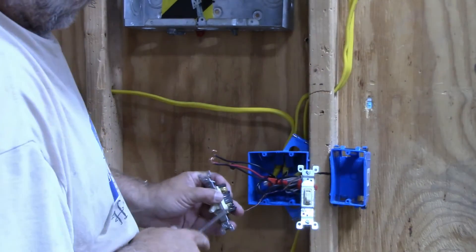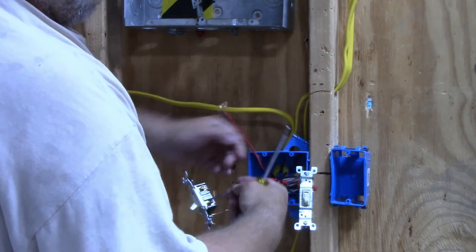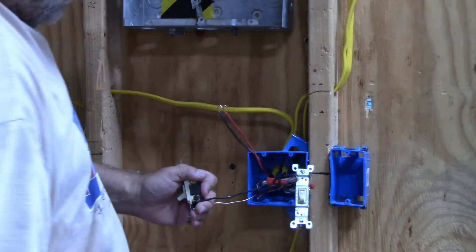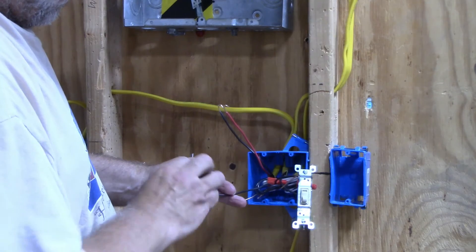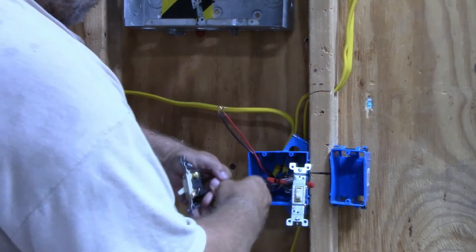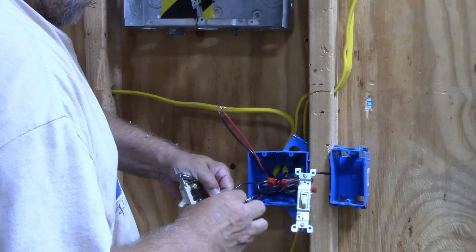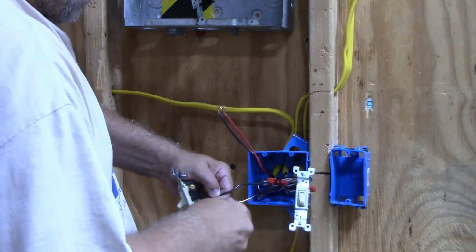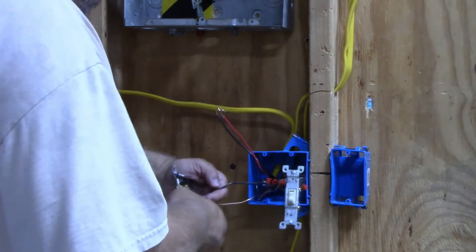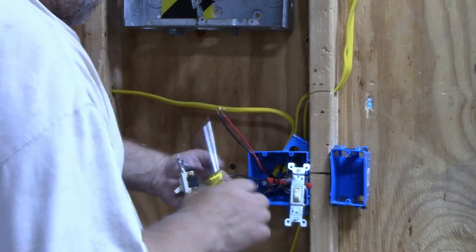The black screw is going to get the power wire in this case. The power wire on the black screw is not staying on there.